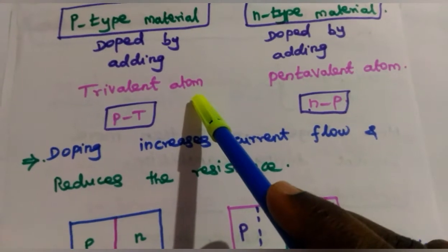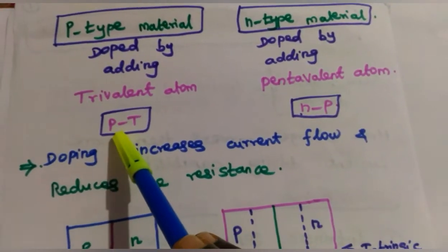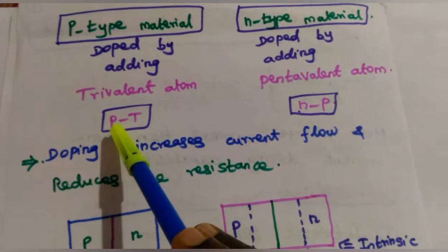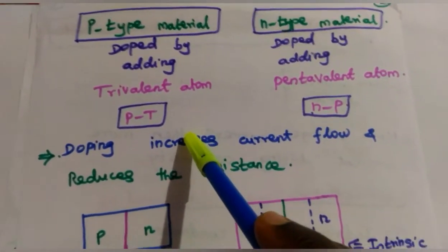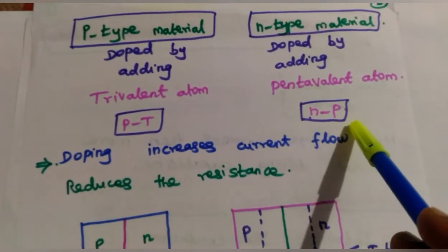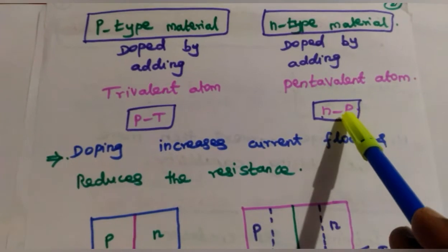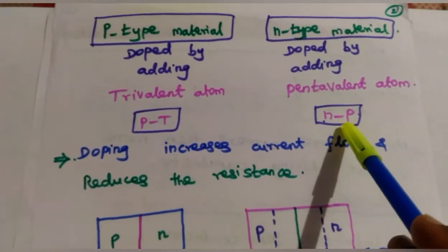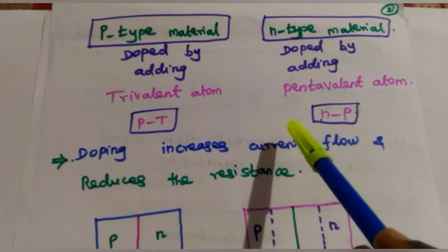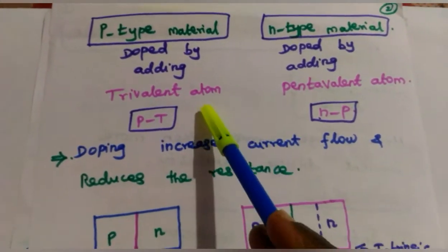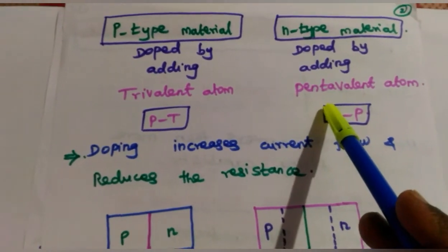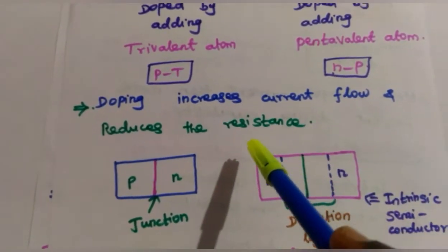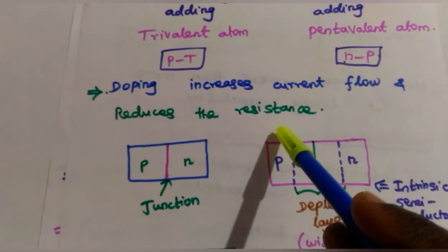A simple memory trick: after the alphabet P comes T, so trivalent atoms are added to the P-type material. After the alphabet N comes P, so pentavalent atoms are added to the N-type material. This is a shortcut method to remember which atom is added where. Doping normally increases current flow and reduces resistance in the semiconductor material.